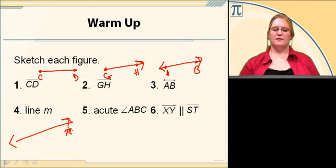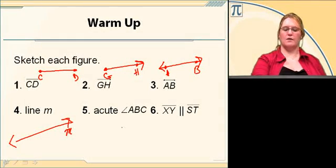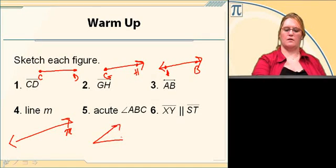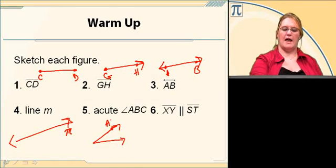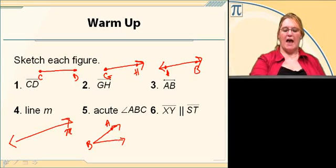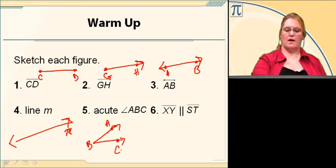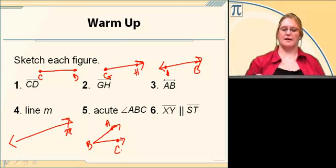Number five says acute angle ABC. So I draw an angle. Then at the top ray, we're going to put a point and label it A. The vertex has to be B, because B is in the middle, and then the bottom ray, we'll put a point and label it C.